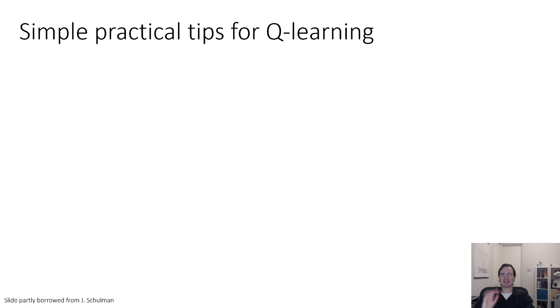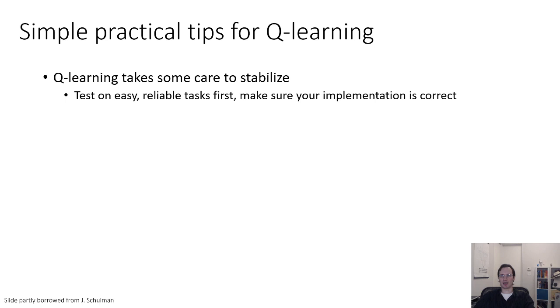Some practical tips for Q learning. If you want to use deep Q learning in practice, the material in this lecture gives you the theory and background, but to implement in practice, there are a few tricks you need. First, Q learning takes a lot of care to stabilize. If you just code it up as I described and run it, probably the first thing that you'll see is that performance will go up a little bit, then it will drop, and then it will be really bad, and then your algorithm won't work. Tuning hyperparameters for Q learning tends to be more time-consuming than for regular supervised learning. It's a good idea to test on easy, reliable tasks first, tasks that are very simple, like maybe tasks with one-dimensional state or a grid world, to make sure that your implementation is actually correct.